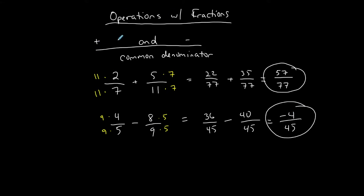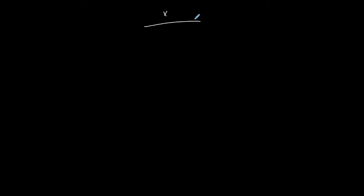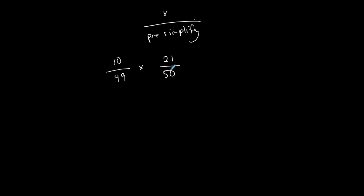So that's the sum and the difference — addition and subtraction of two fractions. You need a common denominator to do that. Now let's talk about multiplication. With multiplication, I'm going to pre-simplify and then multiply across the top and multiply across the bottom. What I mean by that is: let's say I have 10 over 49 times 21 over 50. You could multiply straight across — 10 times 21 on top and 49 times 50 on the bottom — and then simplify. But personally I don't want to deal with those big numbers, so I pre-simplify. And I can only do this with multiplication of fractions.